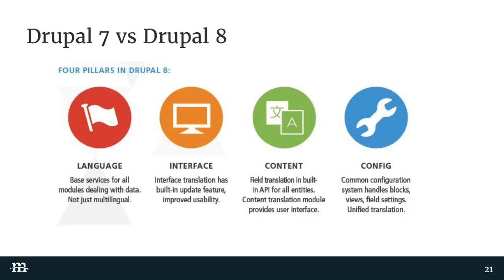Drupal 8 decided to make all of those translation modules part of the core. They really wanted to start with language as the base of the whole CMS. In Drupal 7, the concept is you start with an English site and then add additional languages. In Drupal 8, the first thing you do is pick your language — you can actually have a base in a different language, it's not the assumption that English is that. Both work pretty well for multilingual, though Drupal 8 is probably a little bit stronger.